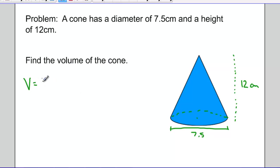Well, we just saw the volume of the cone is equal to one-third times pi r squared times the height. Plugging in the numbers we know, we know the radius is 7.5 divided by 2 all squared. The height is 12 centimeters.